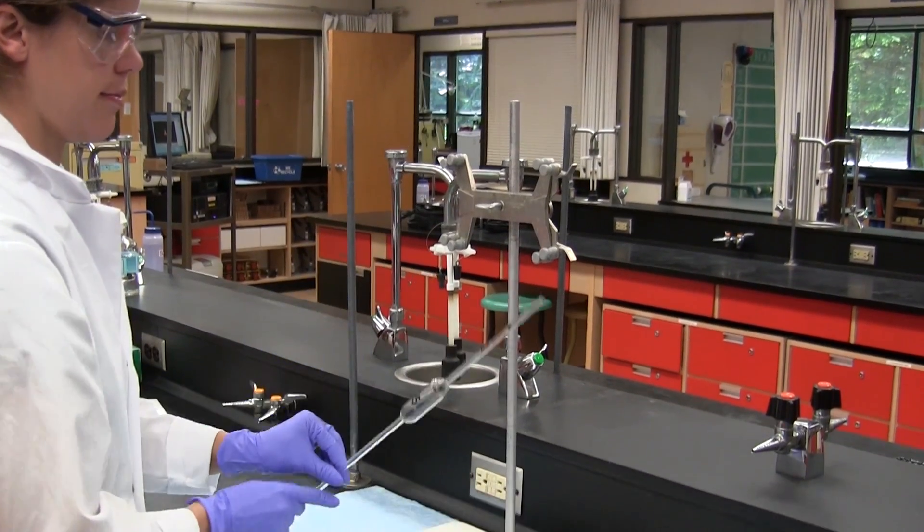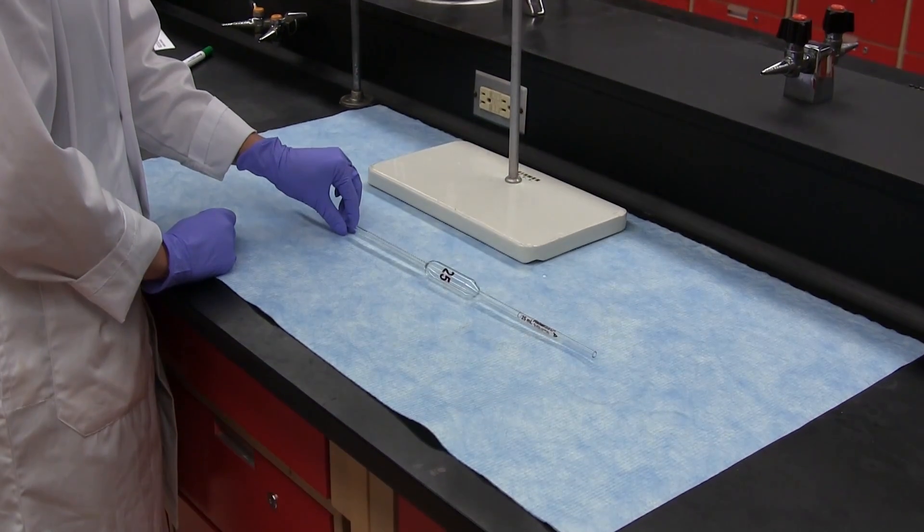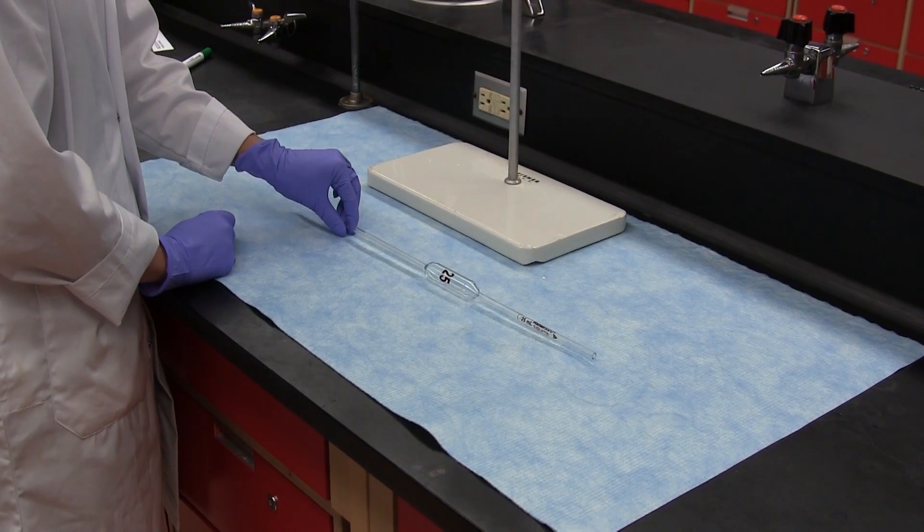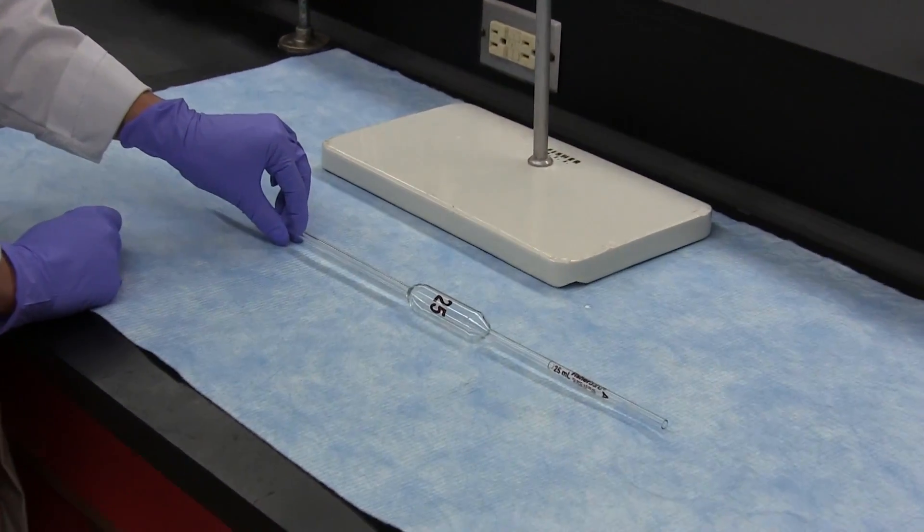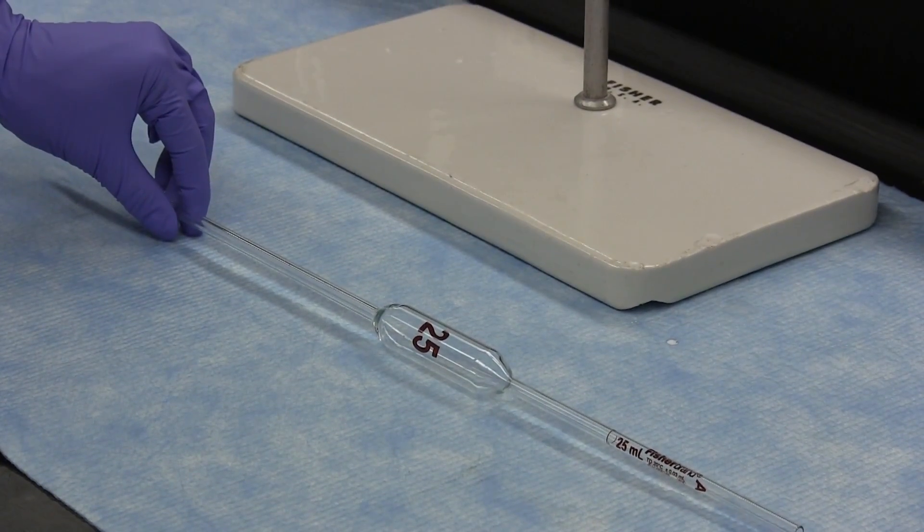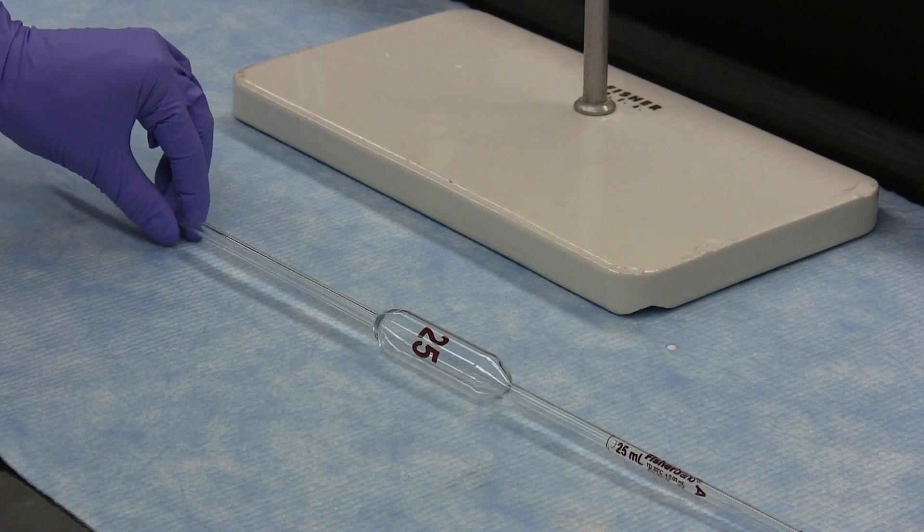This video shows you how to prepare and use a volumetric pipette. A volumetric pipette is calibrated to deliver a fixed amount of liquid with very high precision and they come in a variety of sizes.